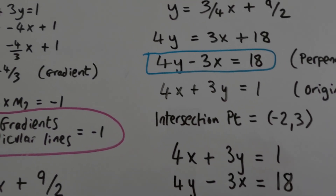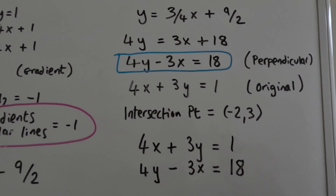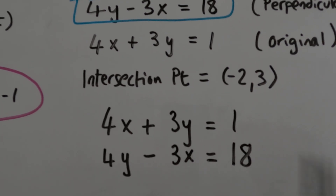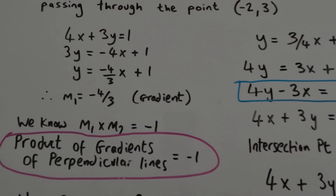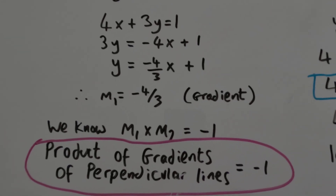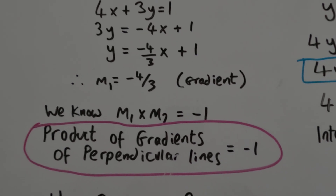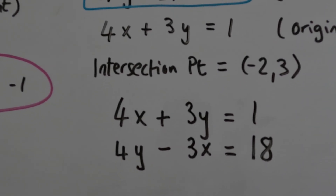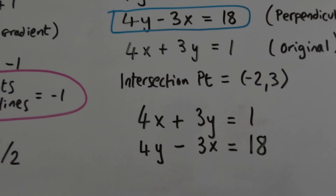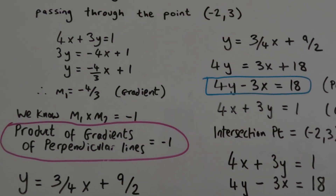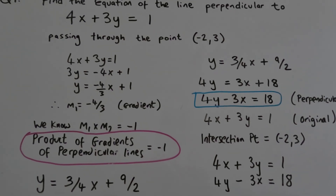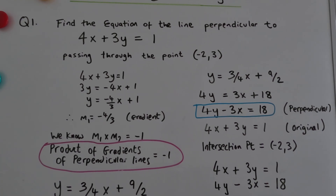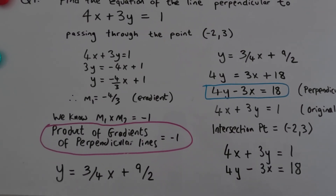The original question was: find the equation of the line perpendicular to 4x plus 3y equals 1, passing through the point minus 2, 3. The answer is 4y minus 3x equals 18. The key takeaway is that the product of the gradients m1 times m2 equals minus 1. Thanks for watching — we'll be looking at more A-level and Scottish Higher maths exam questions. Join me for question 2 on the next video. Please like, share, and subscribe!